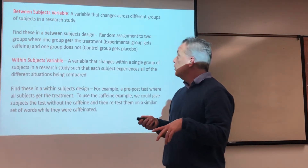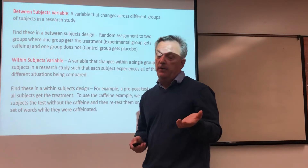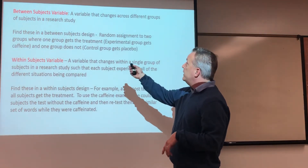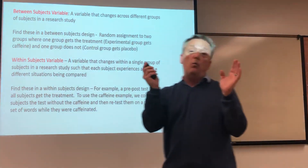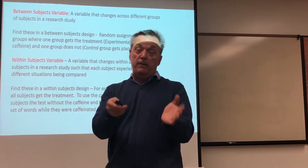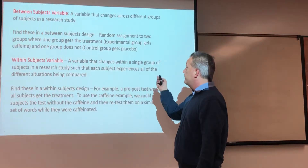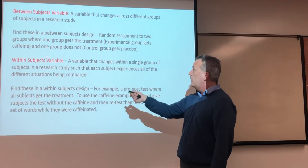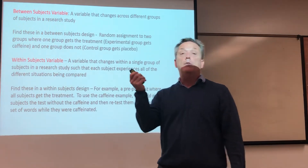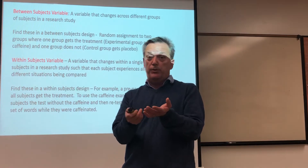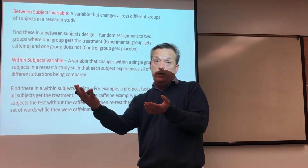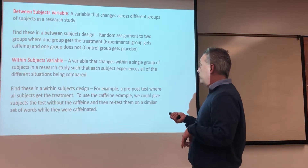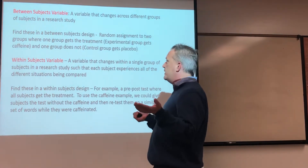A couple other terms: independent variable and dependent variable. We've been talking about these in the discussion assignments and you've been doing really well identifying them. The independent variable is a variable in an experiment that changes across or within subjects to allow comparison of behavior in different situations — it's essentially the variable that you manipulate. The dependent variable is a behavior that researchers are interested in measuring, such as the number of words recalled correctly on a memory test.